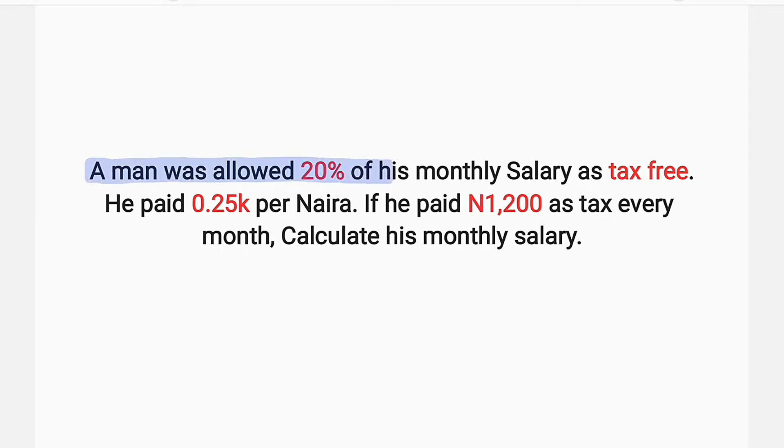A man was allowed 20% of his monthly salary as tax-free. He paid 25 kobo per every naira. If he paid the sum of 1,200 naira as tax every month, we're asked to calculate his monthly salary.